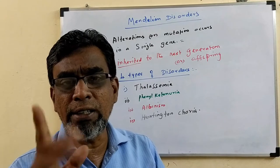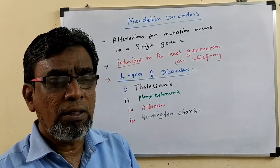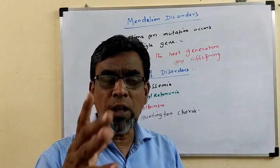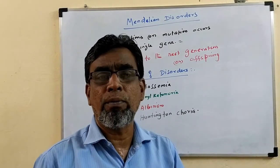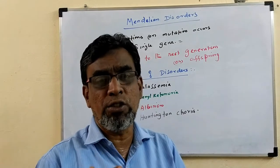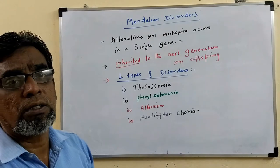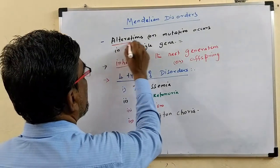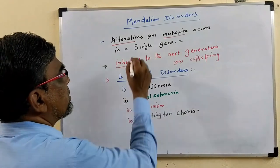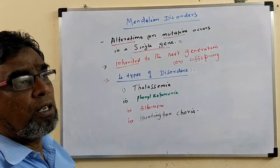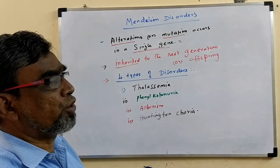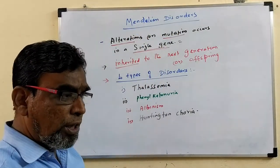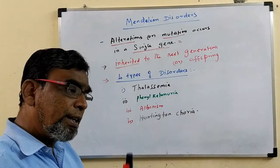If anything changes takes place in the gene or gene structure, this leads to a new character. This character will be inherited to the next generation through parents to offspring. If you change the genes, you can get a new character. The gene structure gets altered or by mutation, some disorders will form. These diseases caused by changes in the gene structure are called Mendelian Disorders.